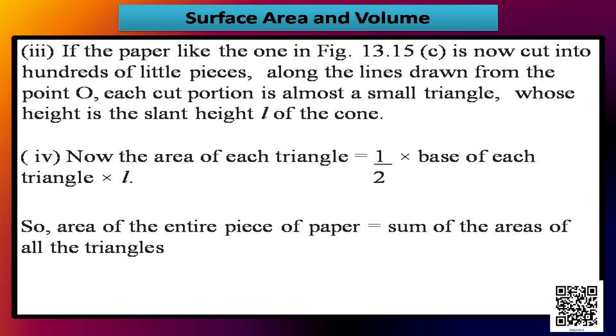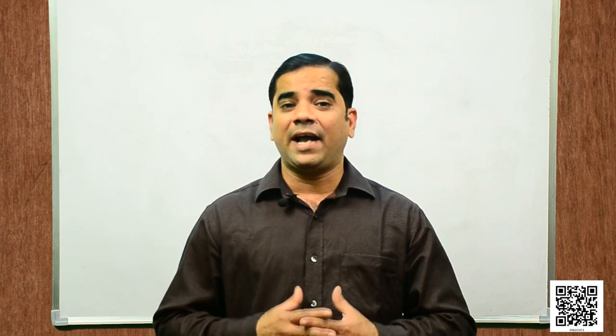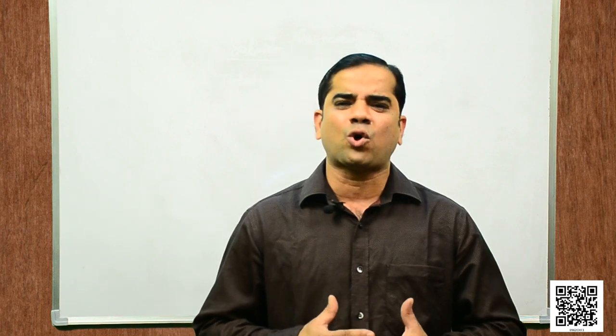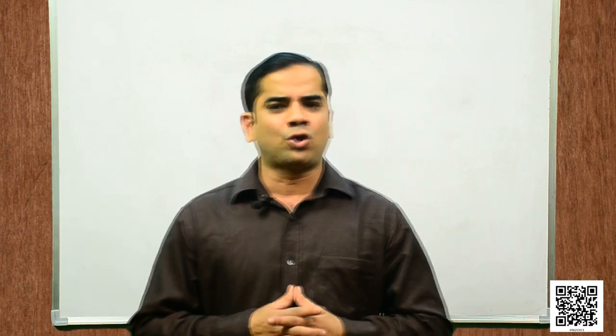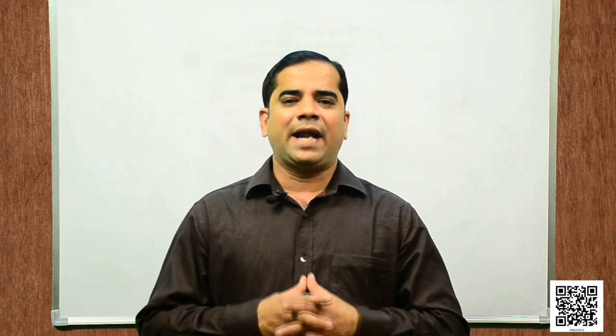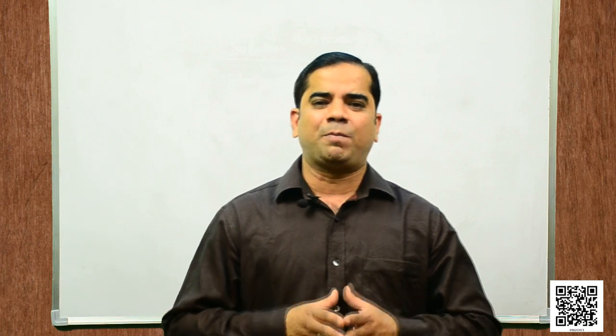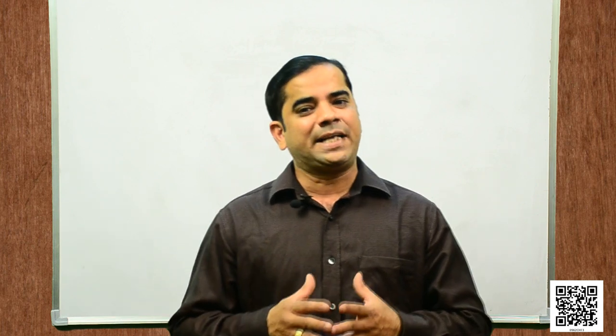The area of each triangle is half times base times height, which is l in this case. So the area of the entire piece of paper is the sum of areas of all the triangles: half·b₁·l + half·b₂·l + half·b₃·l and so on. Since l is the same for each triangle but each triangle has a different base, this gives us half·l multiplied by (b₁ + b₂ + b₃ + ...). That means all the bases of the triangles are added and multiplied by half of l.